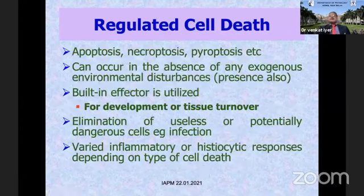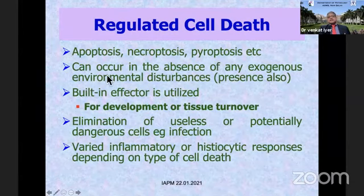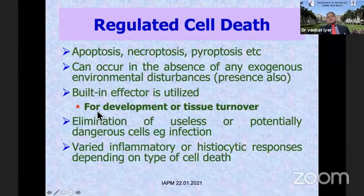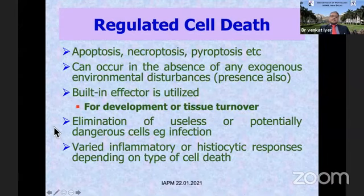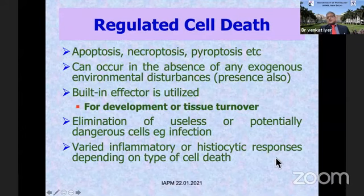Regulated cell death, on the other hand, includes apoptosis, necroptosis, pyroptosis, and many others. It can occur in the absence of any exogenous environmental disturbance, but can also occur in their presence. These utilize built-in effectors and for development or tissue turnover these are normal things sometimes utilized for cell death. Elimination of useless or potentially dangerous cells — like those with infection or tumor — is one of its functions, and varied inflammatory and cytotoxic responses can occur depending on the type of cell death.